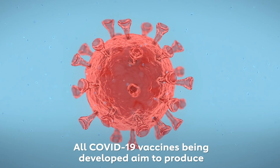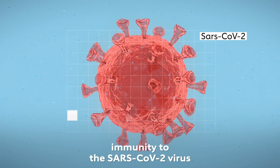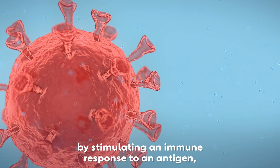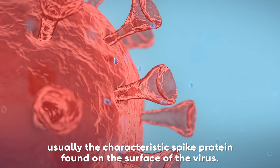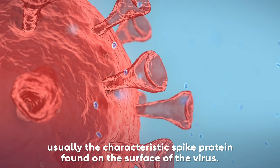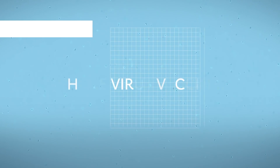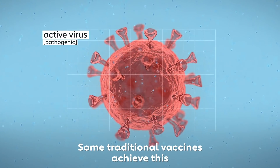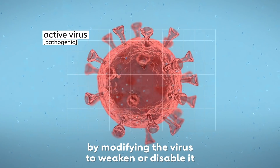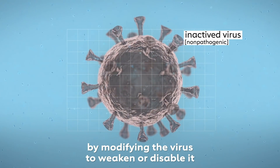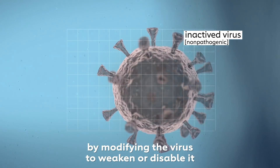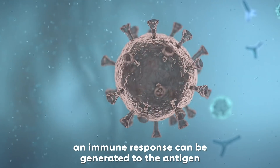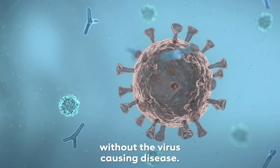All COVID-19 vaccines being developed aim to produce immunity to the SARS-CoV-2 virus by stimulating an immune response to an antigen, usually the characteristic spike protein found on the surface of the virus. Some traditional vaccines achieve this by modifying the virus to weaken or disable it, so that when introduced to the body an immune response can be generated to the antigen, without the virus causing disease.